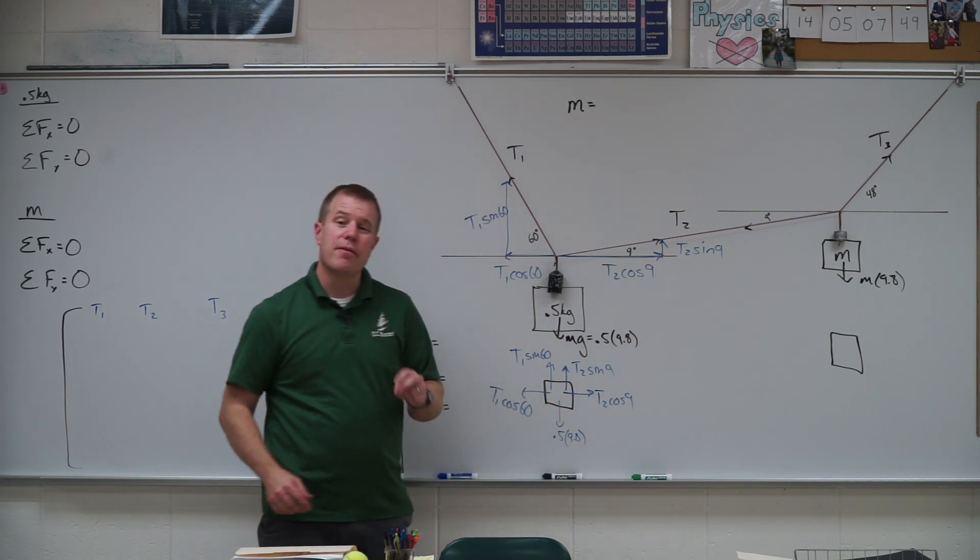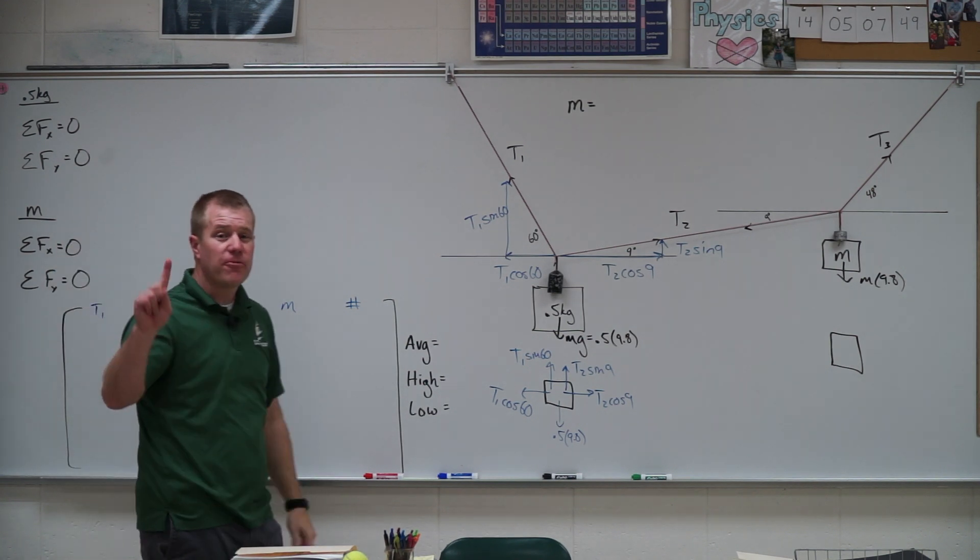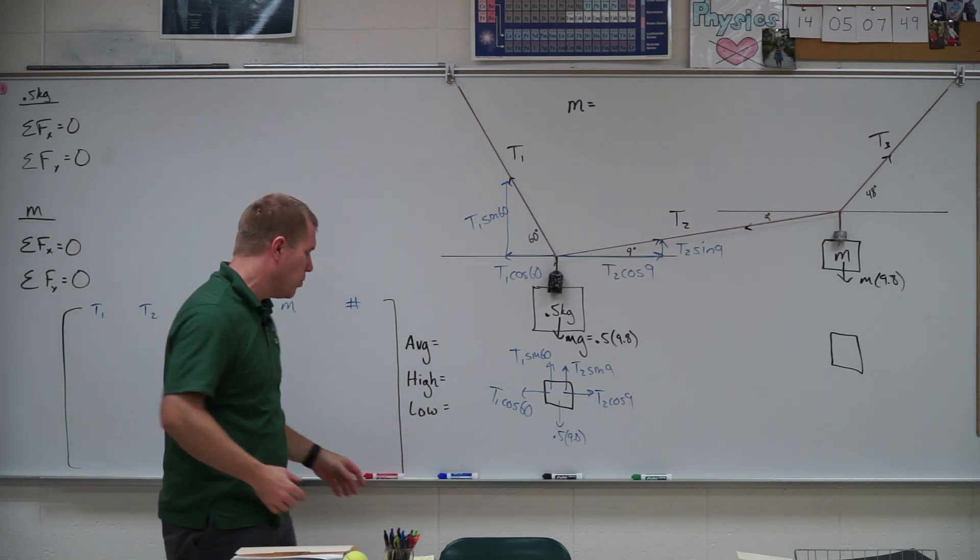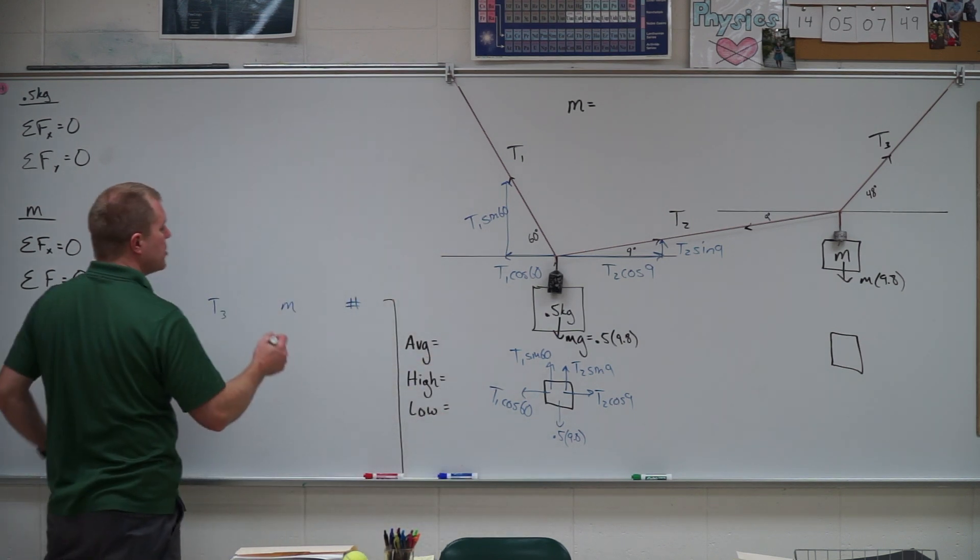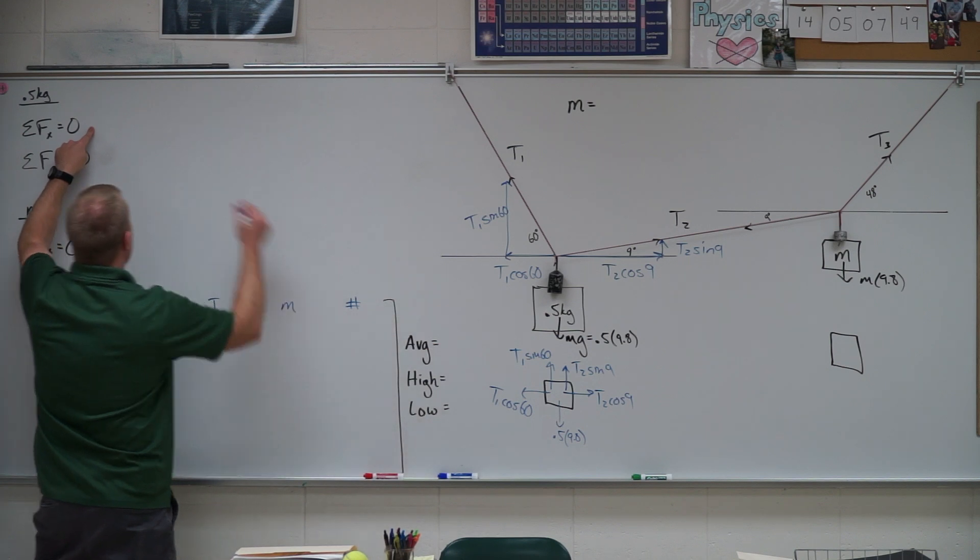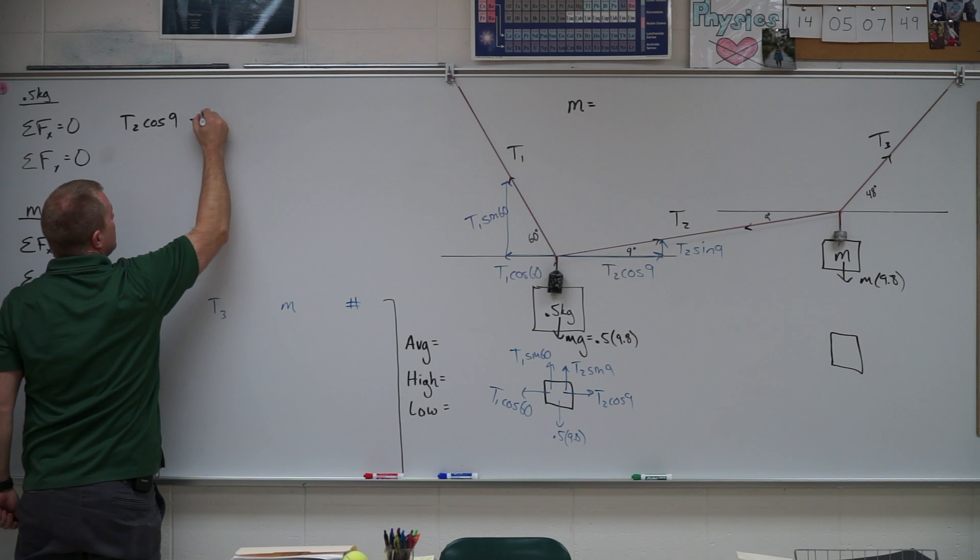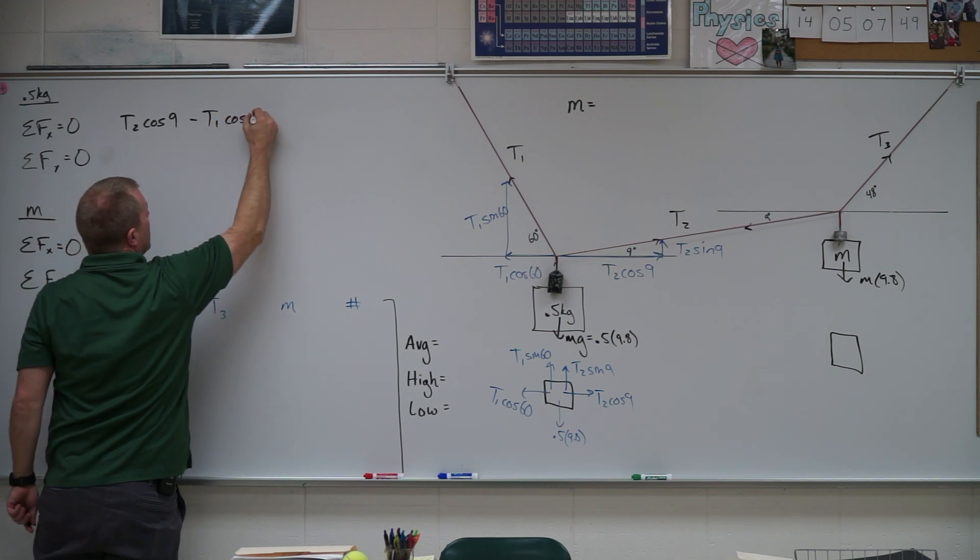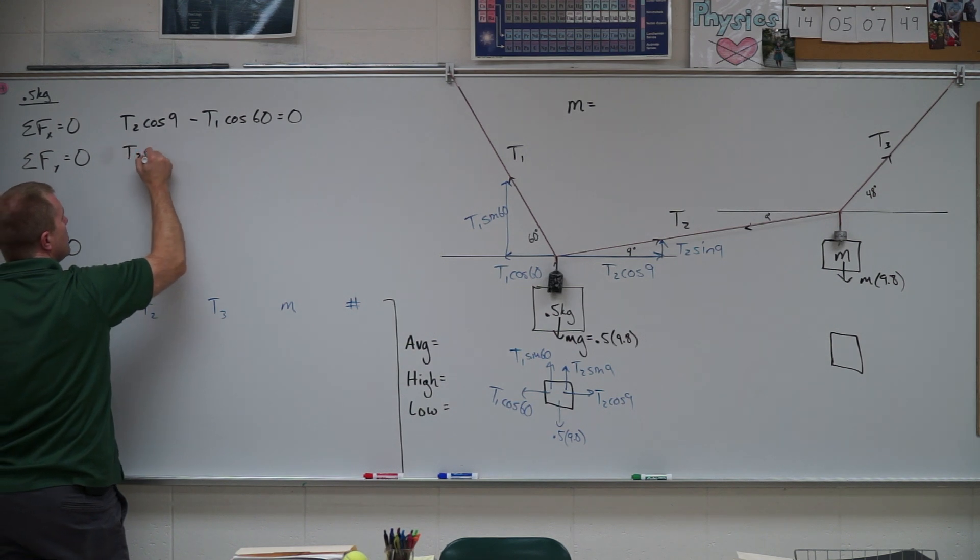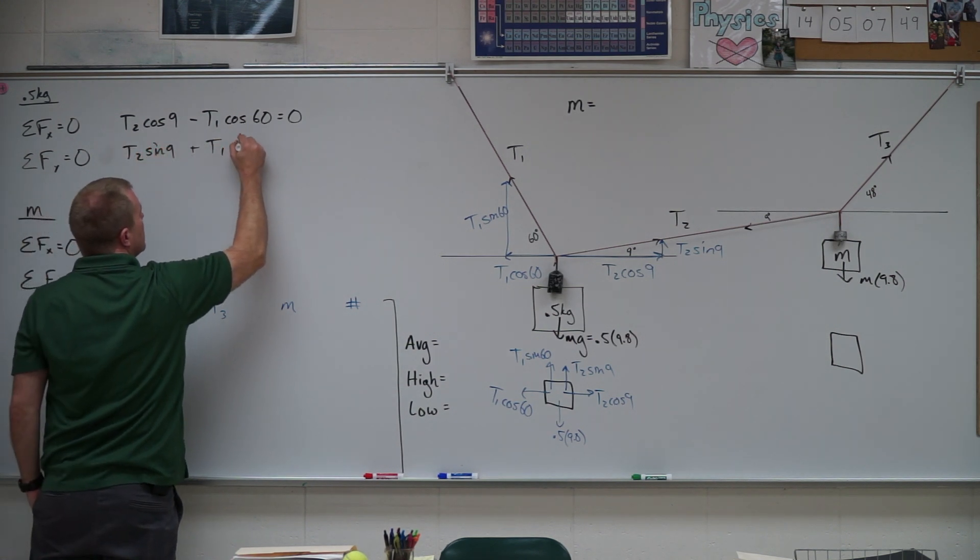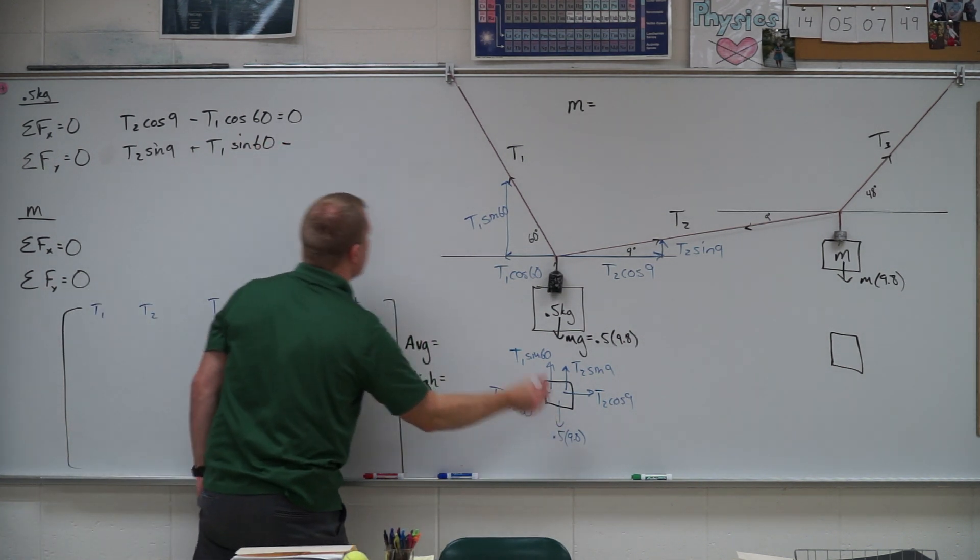We'll go ahead and make a new free body diagram. I like to draw one after I've resolved things into components just to get a feel for what's all there. So I have the 0.5 times 9.8, which is 4.9, and then I have my T2 cosine of 9, I have my T2 sine of 9, my T1 sine of 60, and my T1 cosine of 60. From this free body diagram I can generate two equations, an X equation and a Y equation. This is a first law problem. We are in equilibrium, specifically static equilibrium.